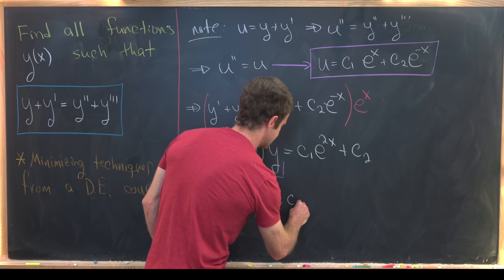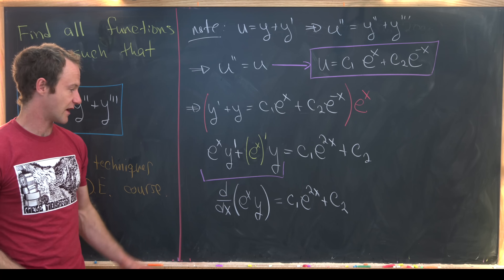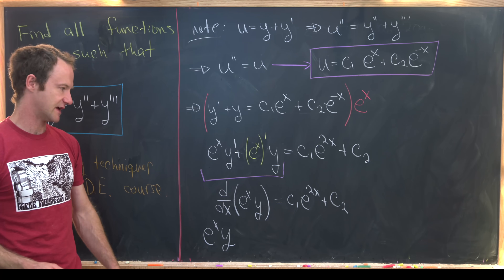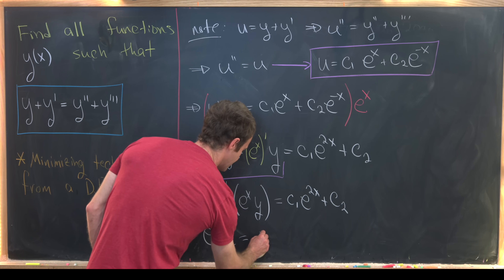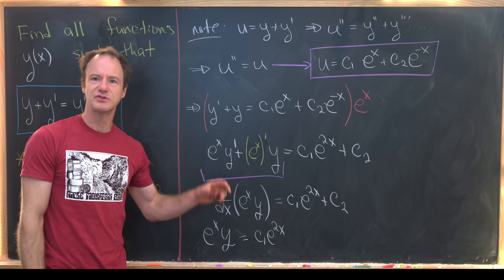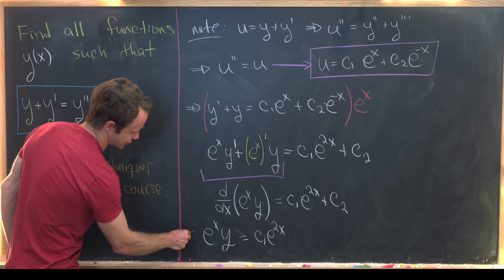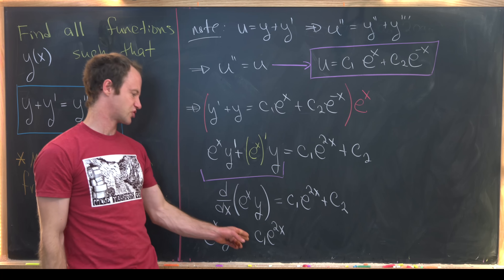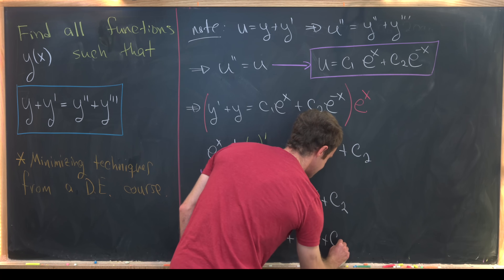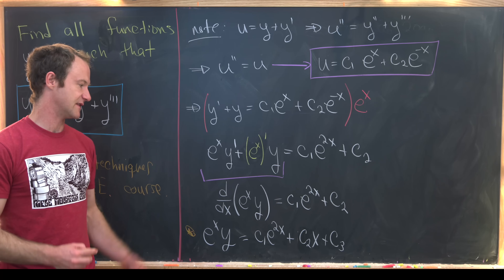So we see that d/dx of (e to the x times y) equals c1 e to the 2x plus c2. Now we can take the antiderivative of both sides. That gives us e to the x times y on the left, and on the right c1 e to the 2x — absorbing the factor of one half into the arbitrary constant — plus c2 times x, plus c3, where c3 is the new constant of integration.